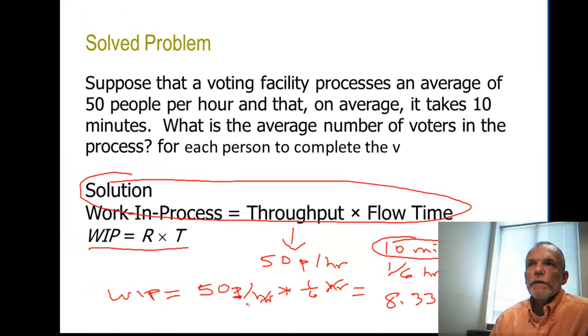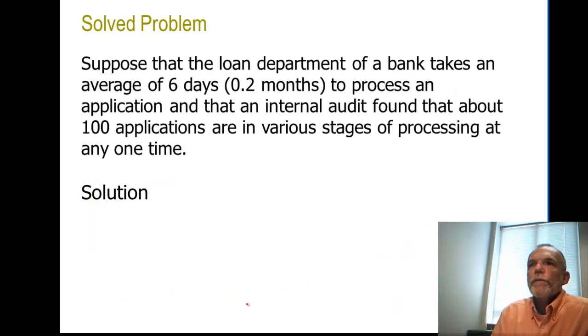It's also a Little's Law problem. The loan department takes 6 days or 2 tenths of a month to process an application, and there's about 100 applications that are in work at any one point in time. Well, the 100 applications in work would be the work in process. The time that it takes, 6 days, would be our time.